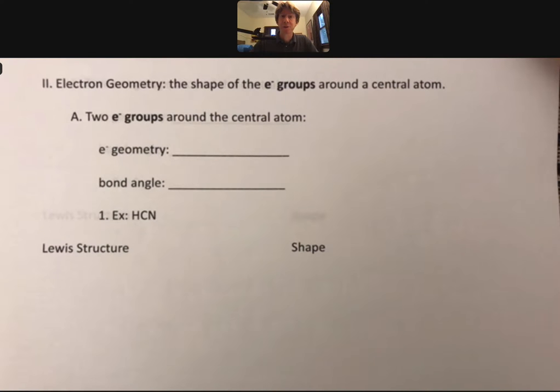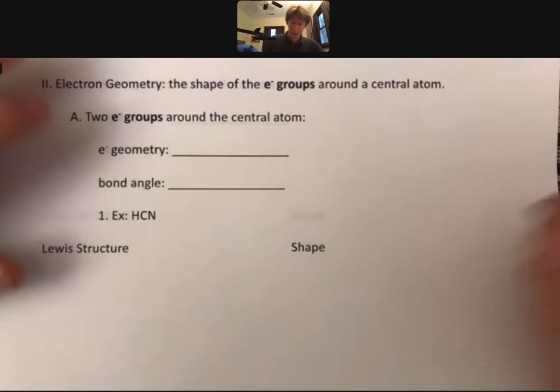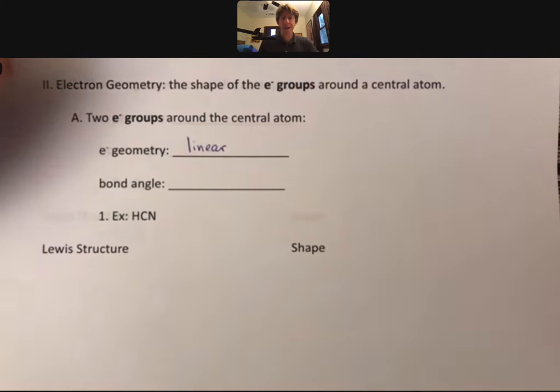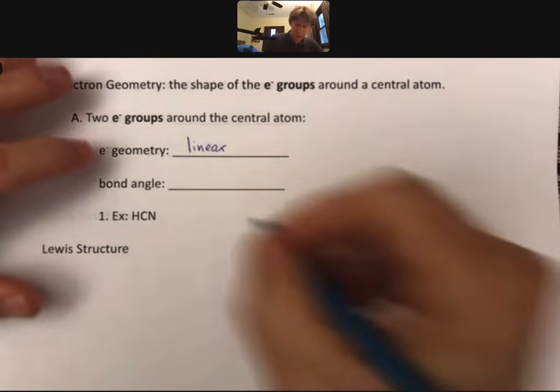We've talked about what an electron group is. Let's talk about electron geometry. Electron geometry is the shape of the electron groups around a central atom. Let's start with two electron groups around the central atom, and the electron geometry will be called linear.